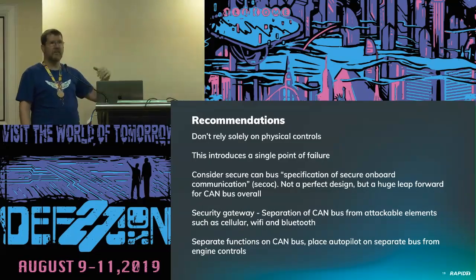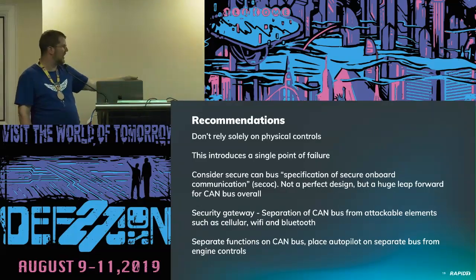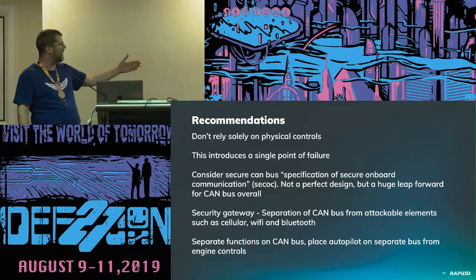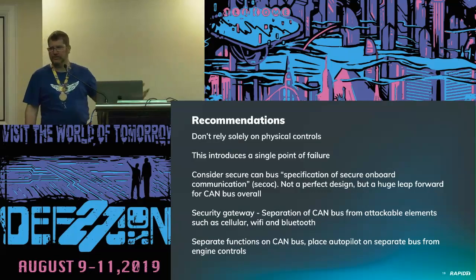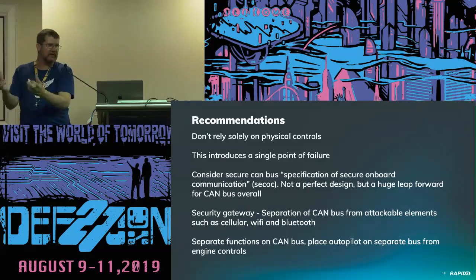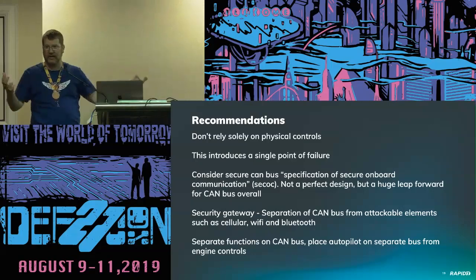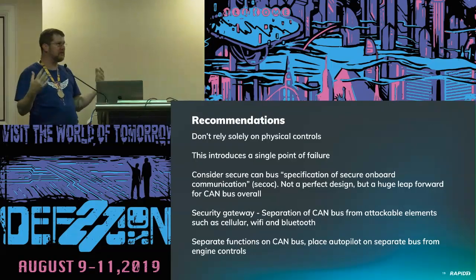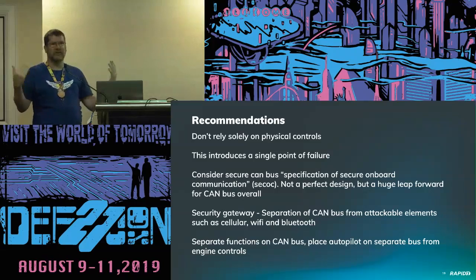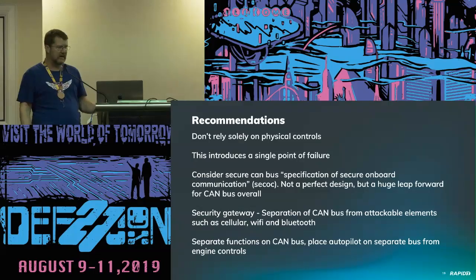Have a separate security device between wireless interfaces and the CAN bus — that's called a security gateway on vehicles, already designed to operate in real-time. And separate your CAN bus functions: put your autopilot on a separate bus from your engine controls. Engine controls are more accessible — it's easy to open an engine compartment and tamper with it. Autopilot servos are more difficult to access. Separating those two onto separate buses means an attacker has more to defeat to conduct a successful attack.